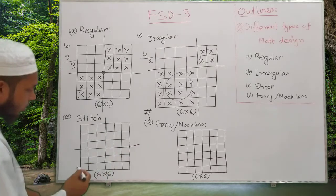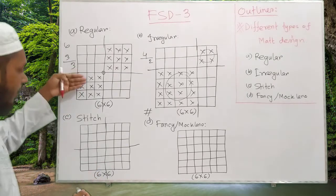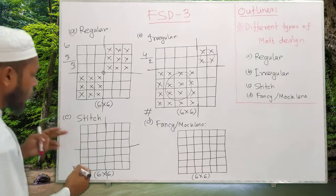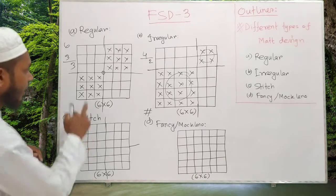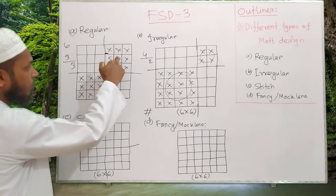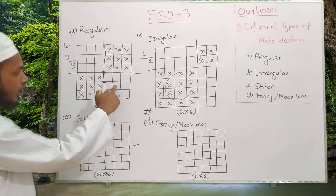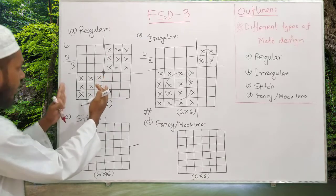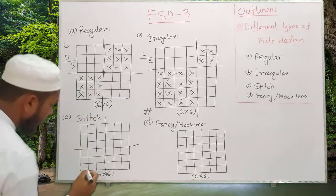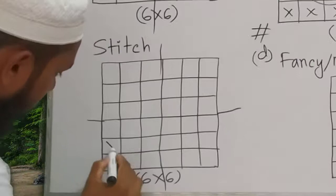So this is the regular stitch. This is the first stitch. Just like regular method design, we can put the stitch in one, two, three, two, three.